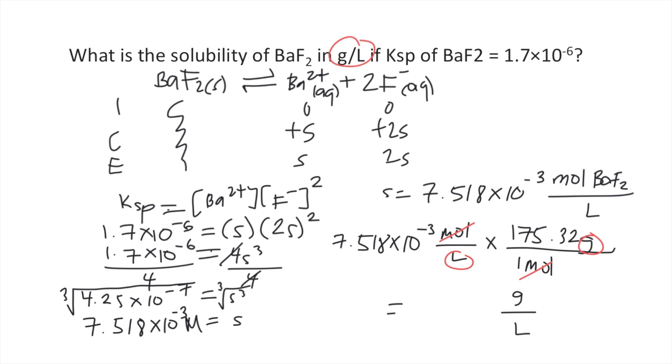So your answer is 7.518 times 10 to the negative 3 times 175.32. And this will give you approximately 1.32 grams per liter. This is the answer to your question.